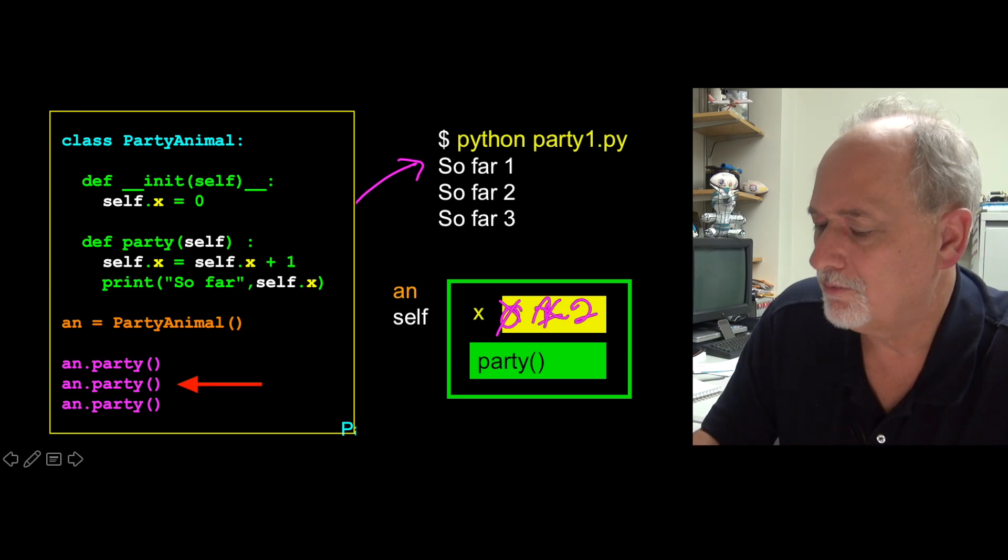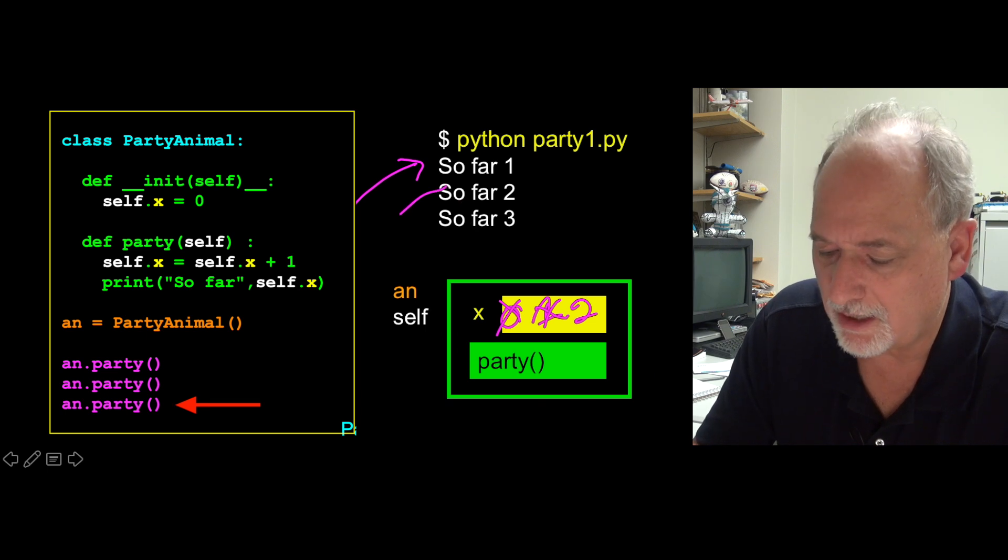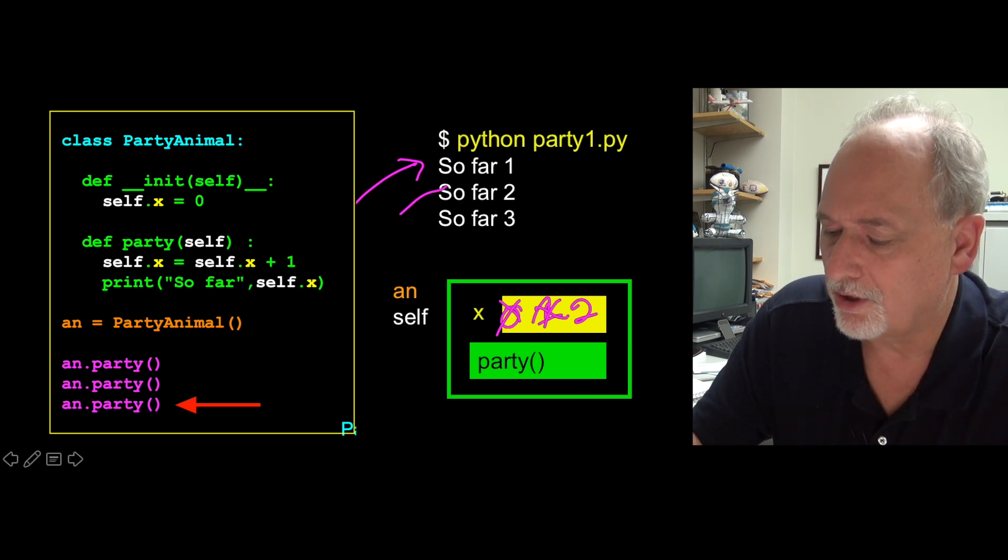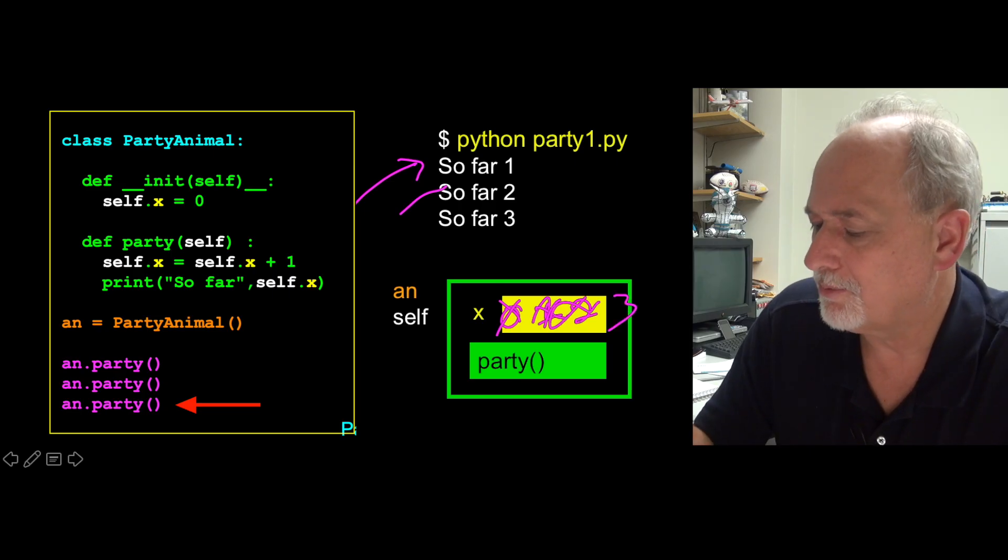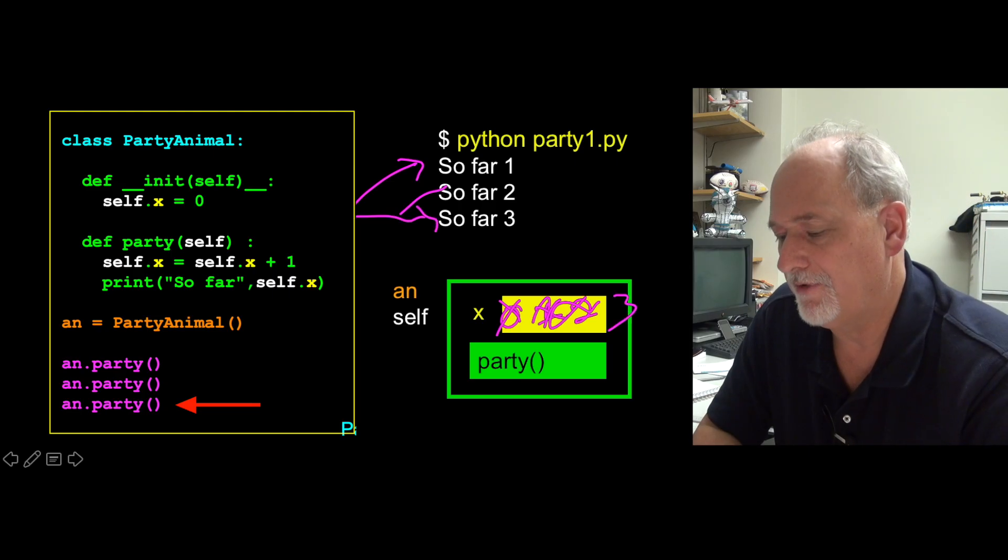And x becomes two. Prints out so far two. Comes back down. And does the last time. Calls it again. Self.x is two. Add one to it and stick it back in. So this becomes three. And we print out three. And then the program finishes.